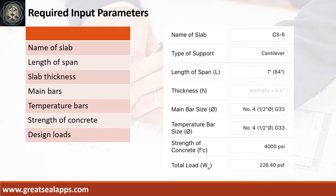Enumerate the input parameters required. Name of slab: CS6. Type of support: cantilever. Length of span: 7 feet. Slab thickness: 6.5 inches. Main bars and temperature bars: 1/2 inch diameter, grade 33. Strength of concrete: 4,000 PSI. Total load: 226.4 PSF.